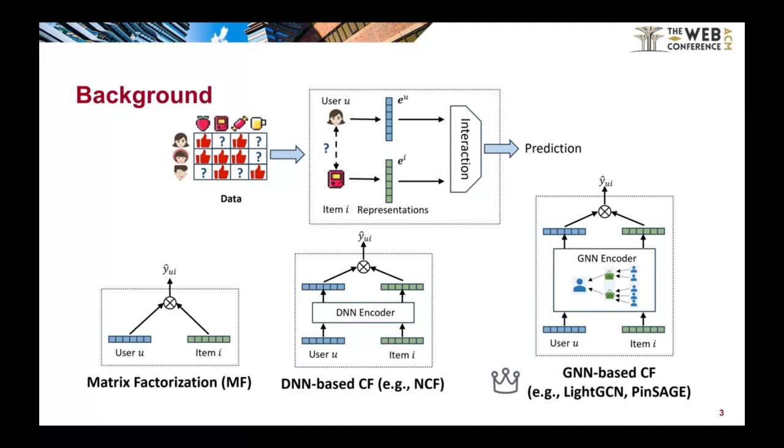Matrix factorization is a classic collaborative filtering method that uses the inner product of user and item representations. However, this method and its variants, such as deep neural network-based models or item similarity models, only model the local connectivity of the user-item interaction data, leading to suboptimal recommendation performance.